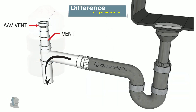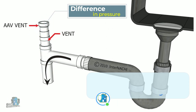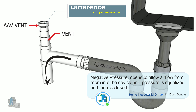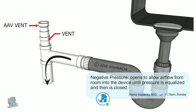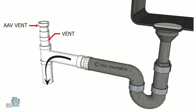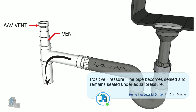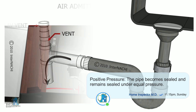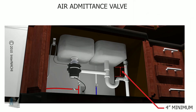These are inexpensive and simple devices that work based on a difference in pressure between the pipe and the house air. Under negative pressure, air is allowed to enter the pipe. Under positive pressure, the device is closed to prevent gases from entering the home. As you can see in this diagram, the device is installed after the trap with a four-inch height above the horizontal leg.